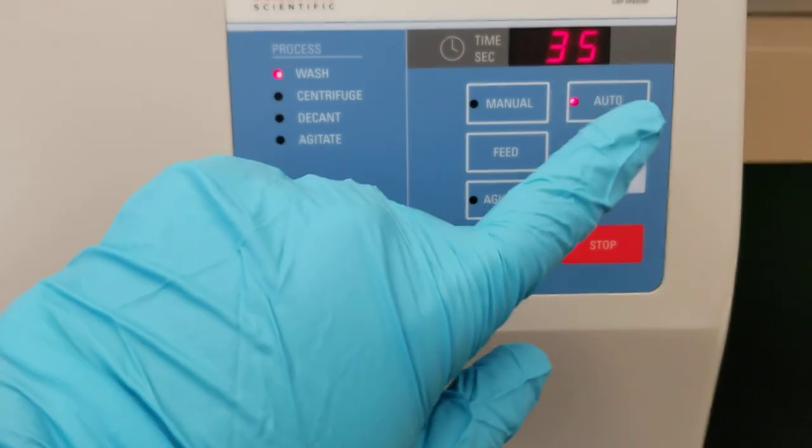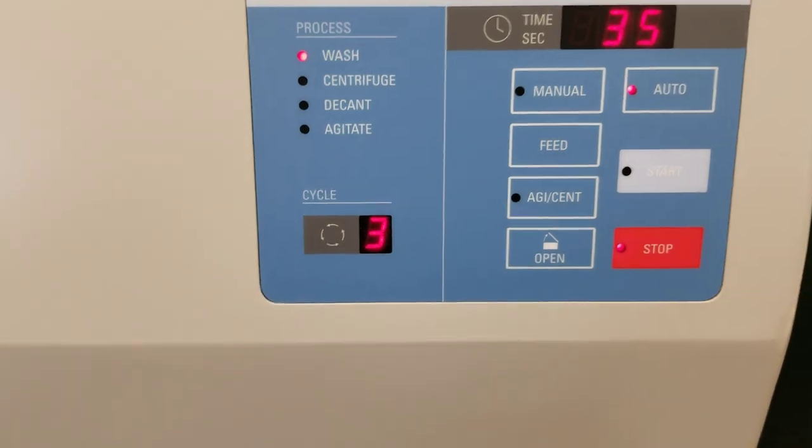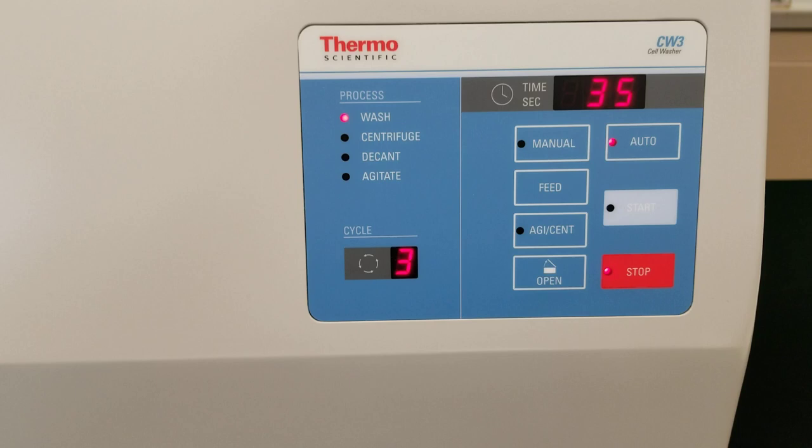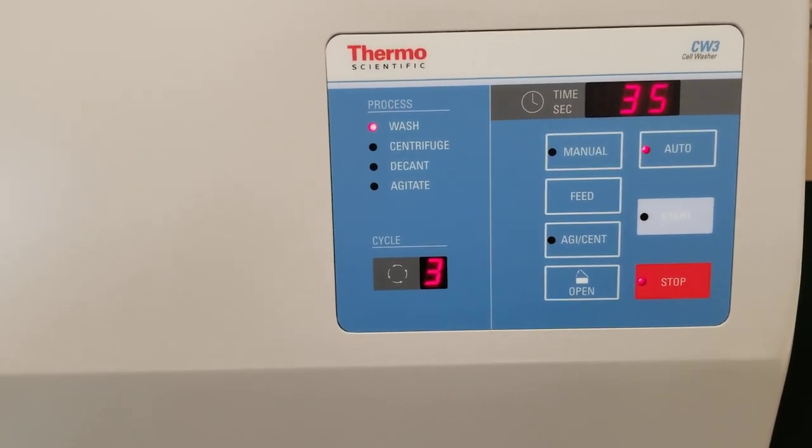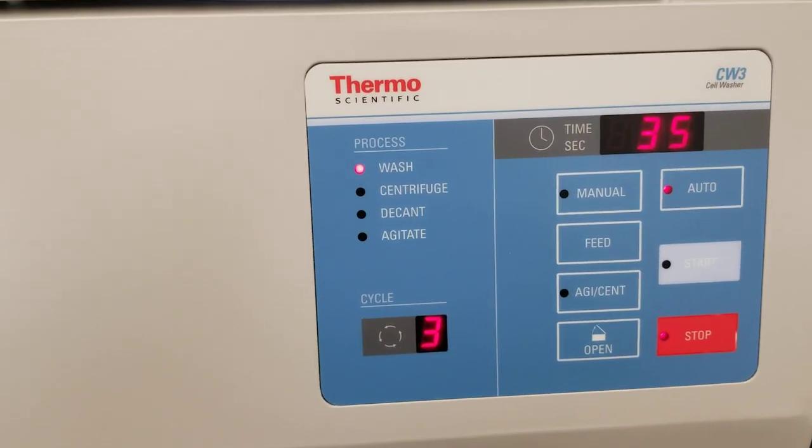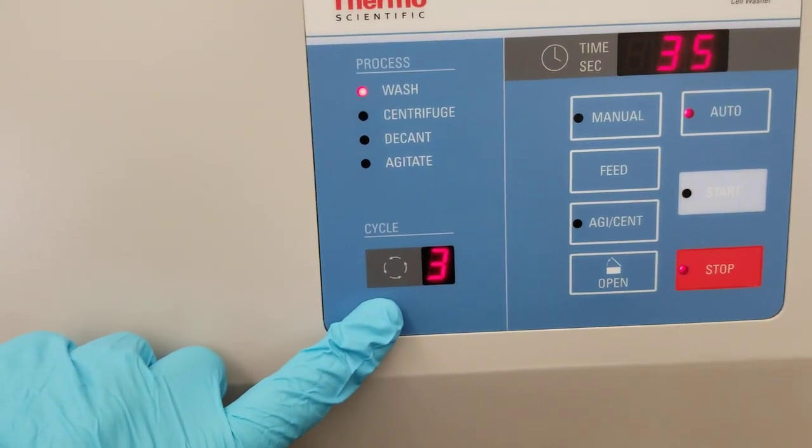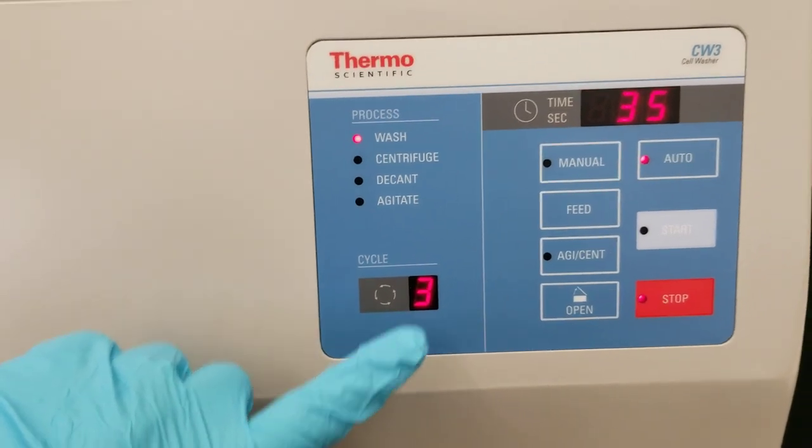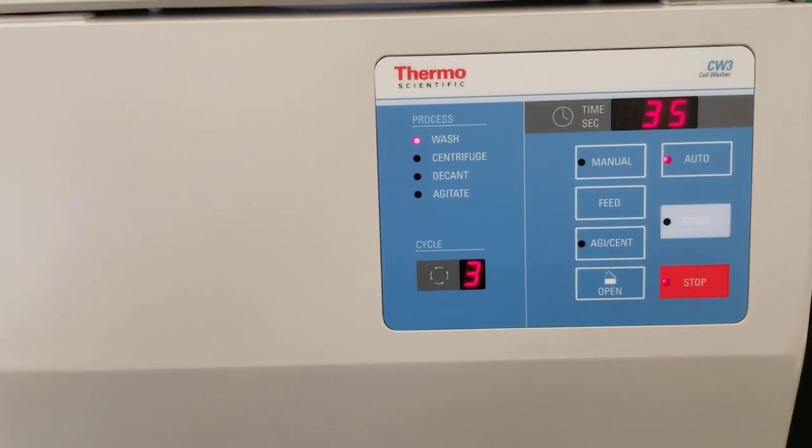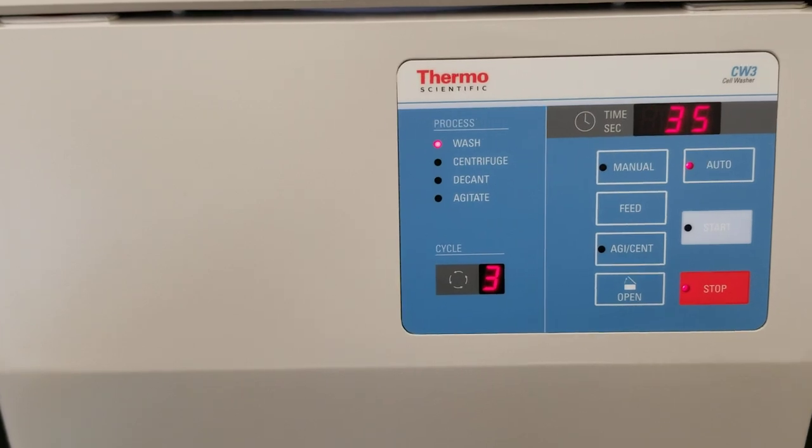This is set on auto. You can put it on manual mode or agitation, centrifuge mode. But we're going to keep it on auto. That means that it's going to do the whole process from start to finish without needing to change anything. Each part of this mode, each step is going to take roughly 35 seconds. And we have three cycles that we're going to run. So one cycle is about 35 seconds. So the most that this takes is up to three minutes, three to five minutes, depending on what it is that you're doing and how many cycles you do.